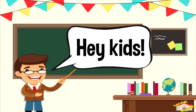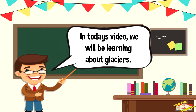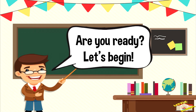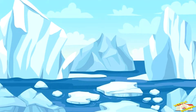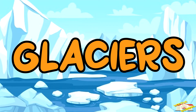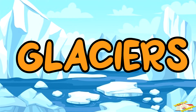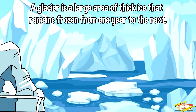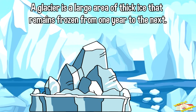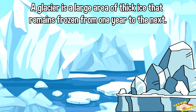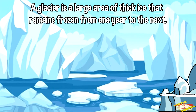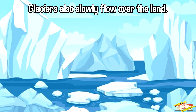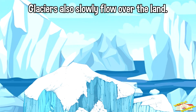Hey kids, in today's video we'll be learning about glaciers. Are you ready? Let's begin. A glacier is a large area of thick ice that remains frozen from one year to the next. Glaciers also slowly flow over the land.